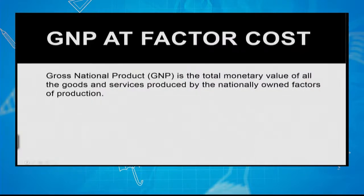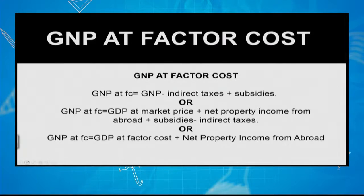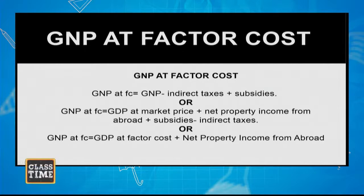To get gross national product at factor cost, you need to remove the effect of subsidies and taxes. You can calculate it as GNP minus indirect taxes plus subsidies, or alternatively as GDP at market price plus net property income from abroad plus subsidies minus taxes — whichever method is easier for you to recall.